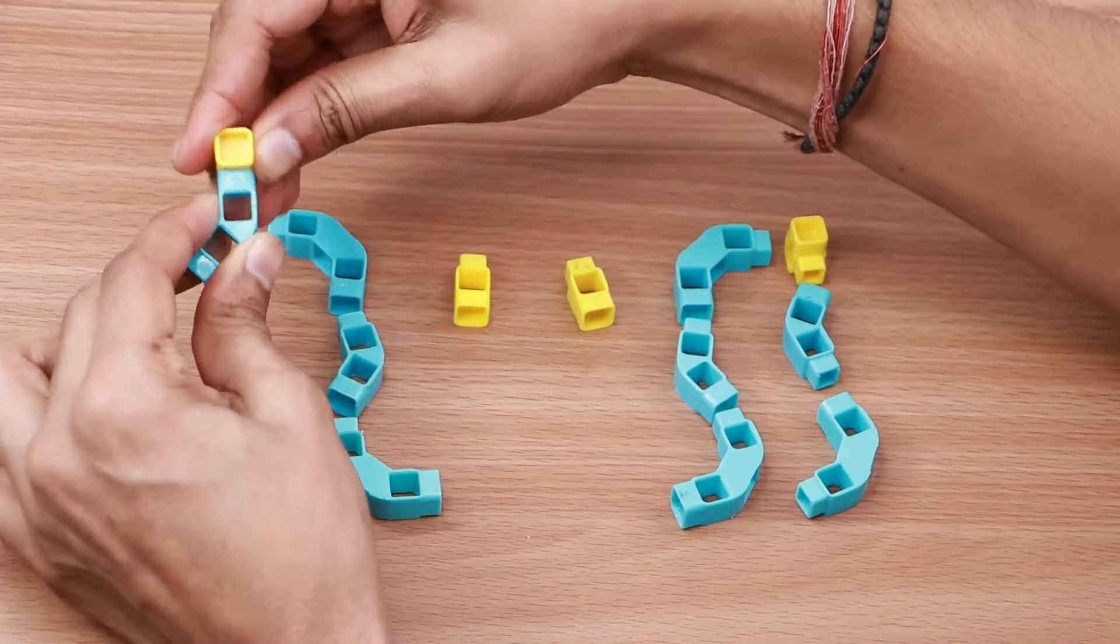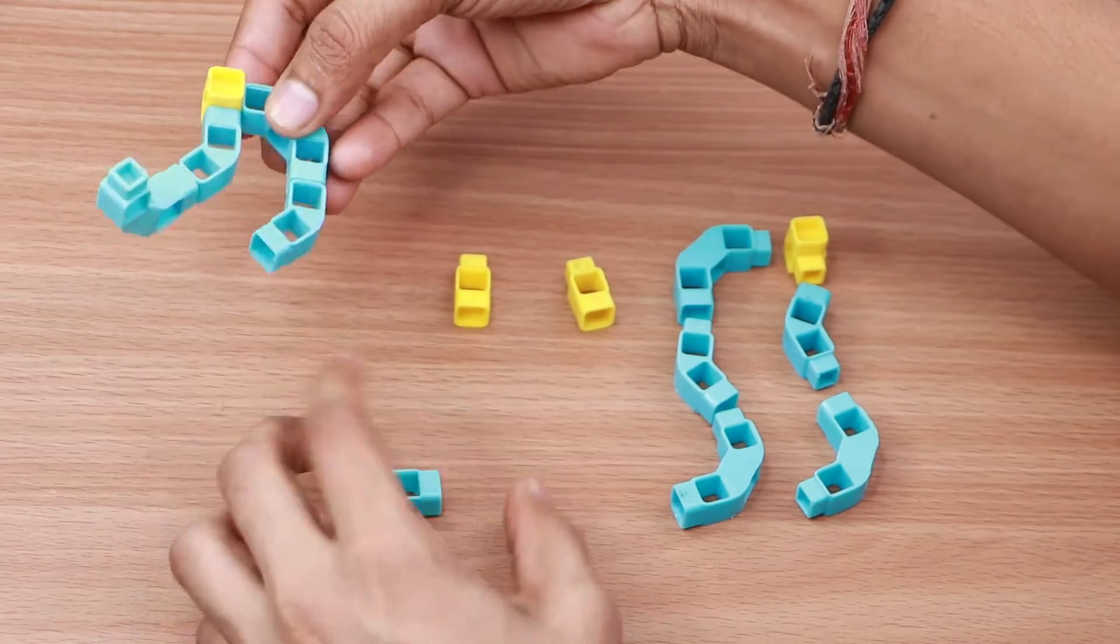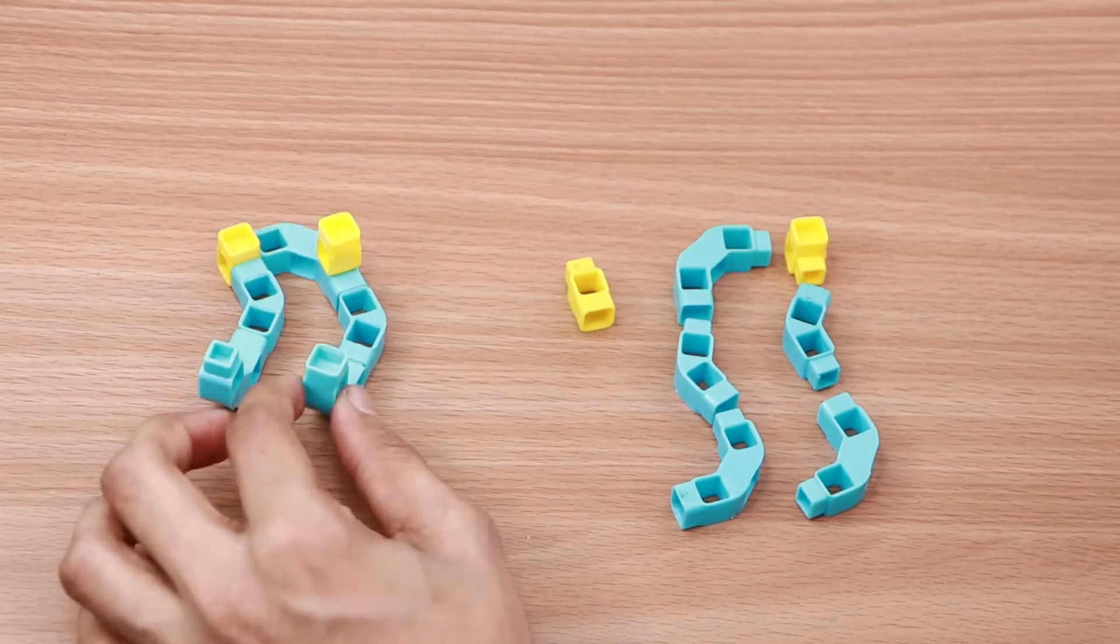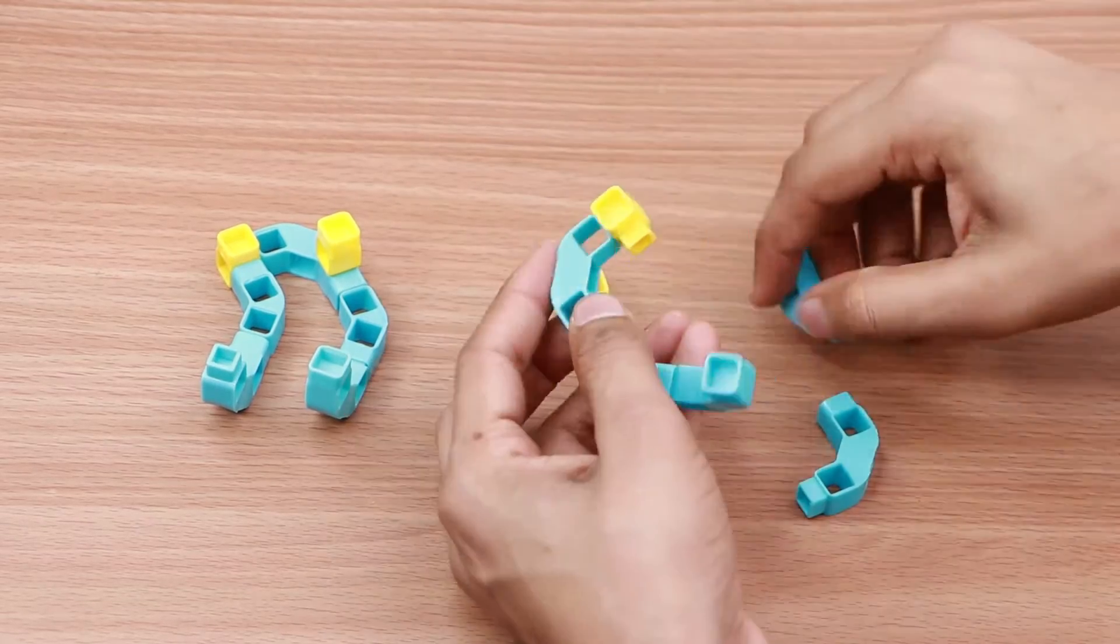Now let's make the middle body of the bike. Attach two two-hole elbows, three three-hole elbows, one one-hole elbow and one one-hole beam to form one half of the body as shown. Repeat the steps with the same set of parts to build the other half.